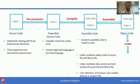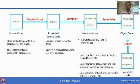In the last step, this object code is given to the linker. The linker combines object code of the source file and library files. Linker combines the data section and text section of source file and library file, and also links definitions of functions and variables defined in other files. By these four steps, finally we get our executable code — that is the .exe file and .out file.